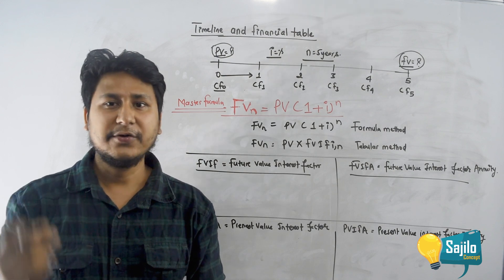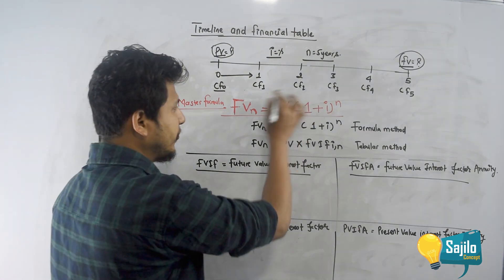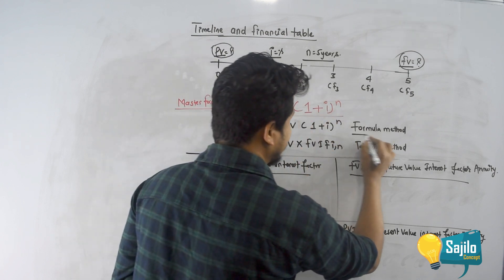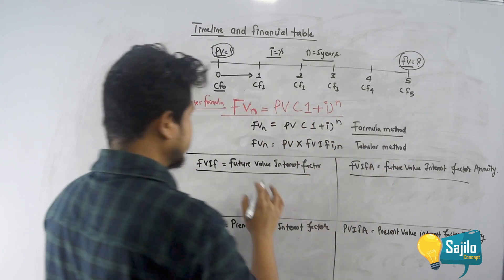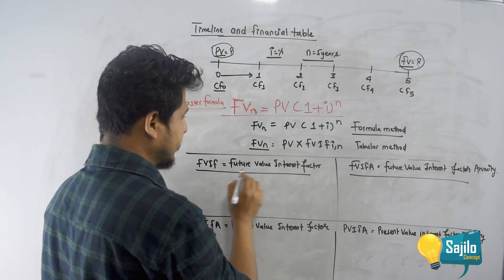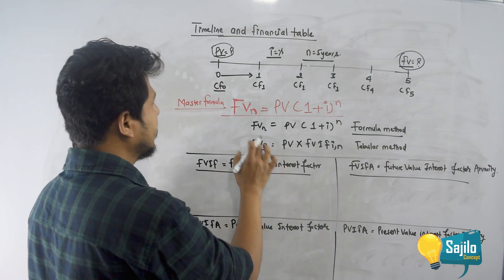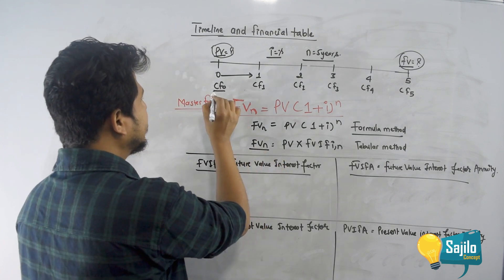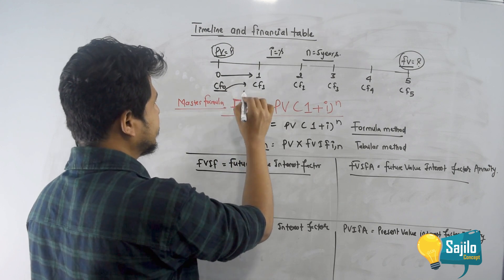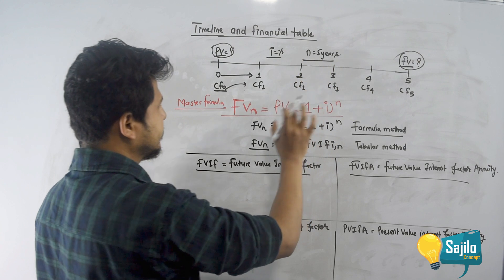This formula uses interest rate and number of periods. This formula means the formula method. Future value = present value × (1 + i)^n. Present value is fixed. Future value is calculated for 1st year, 2nd year, and 3rd year.